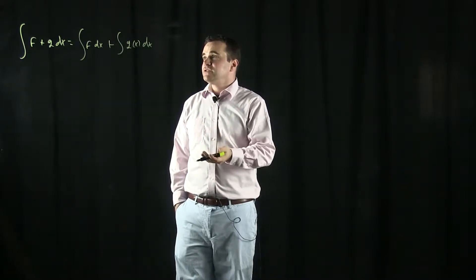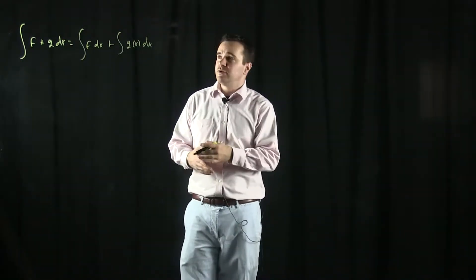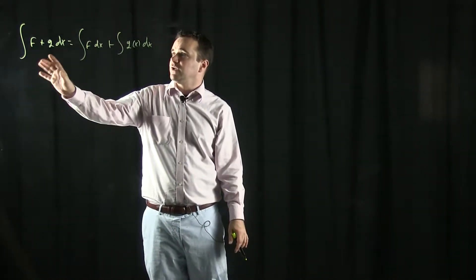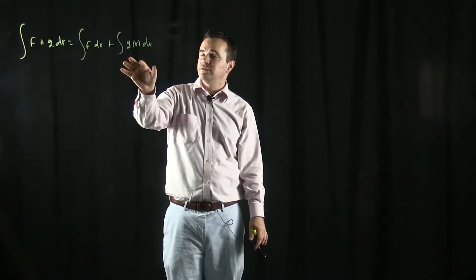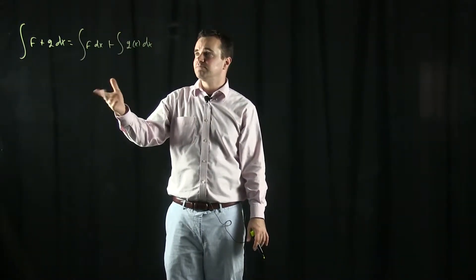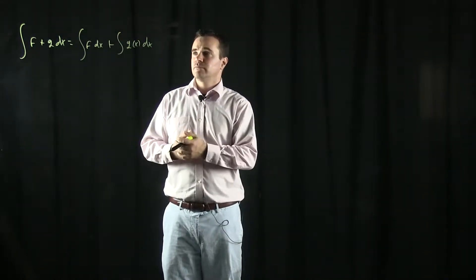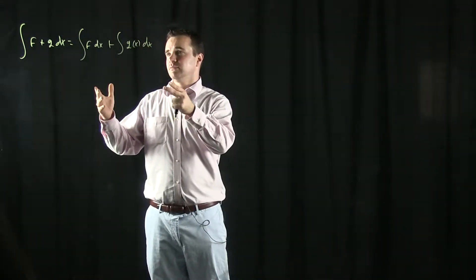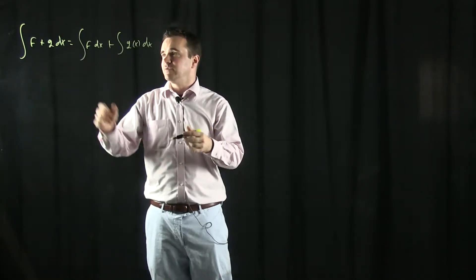So why is this true? By definition of the anti-derivative, this needs to be a function whose derivative is equal to f plus g. But if one function has derivative f and another has derivative g, then because the derivative is linear, you add them together and the derivative will give you f plus g.